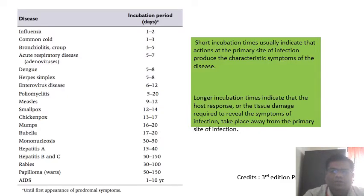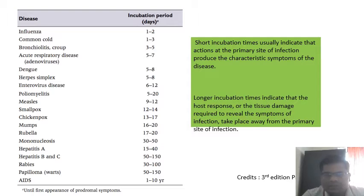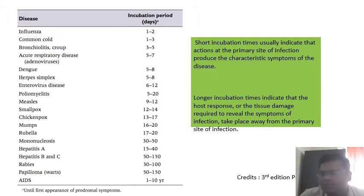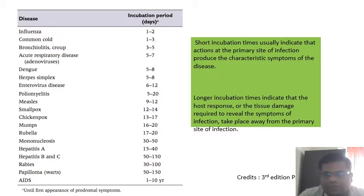The incubation period is very important. A shorter incubation period indicates that the actions are at the primary site of infection, producing characteristic symptoms. Longer incubation periods mean there is tissue invasion, tissue damage, or active replication. Influenza virus and common cold have shorter incubation periods, meaning they act on the primary site of infection and produce local effects.